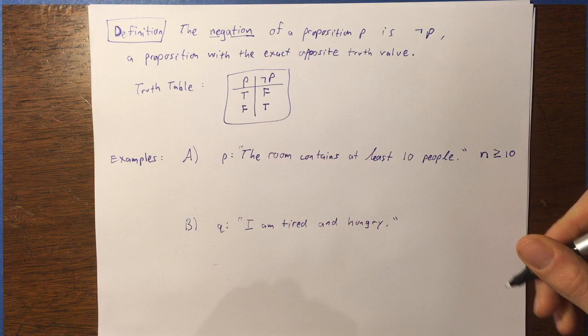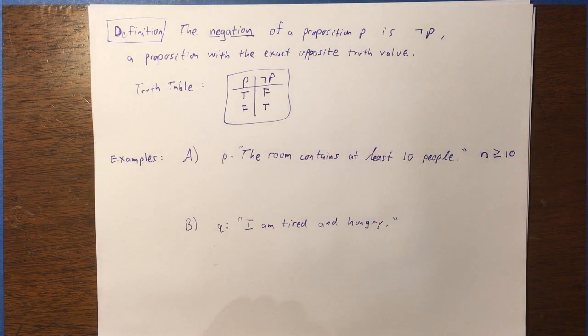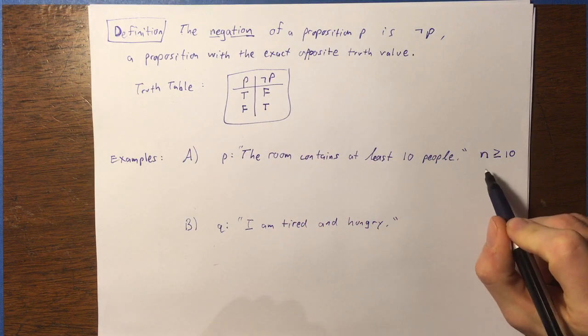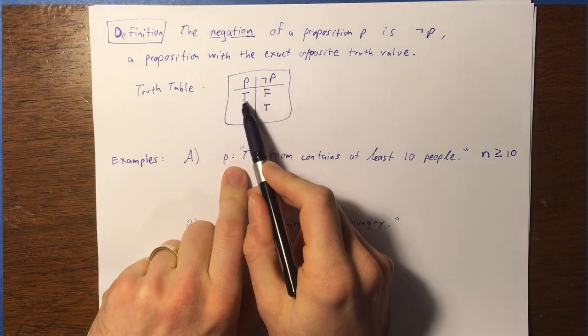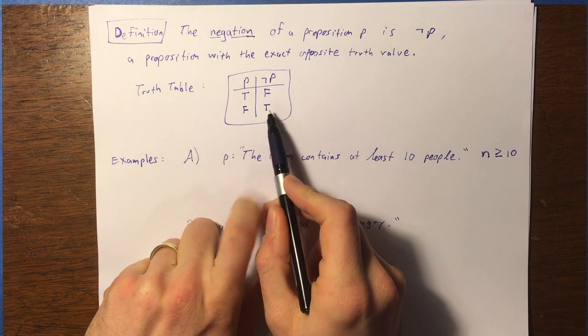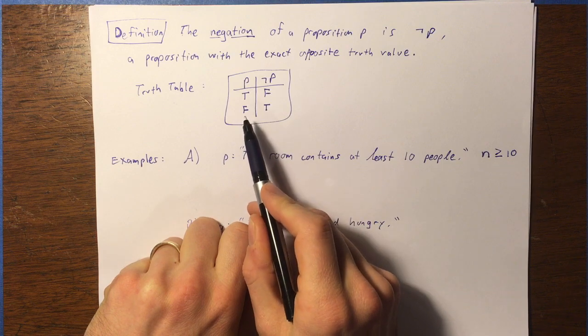So now what we need to do to describe the negation of this is the exact opposite of that, which means that it has to be false whenever this proposition is true, and it has to be true whenever this proposition is false.